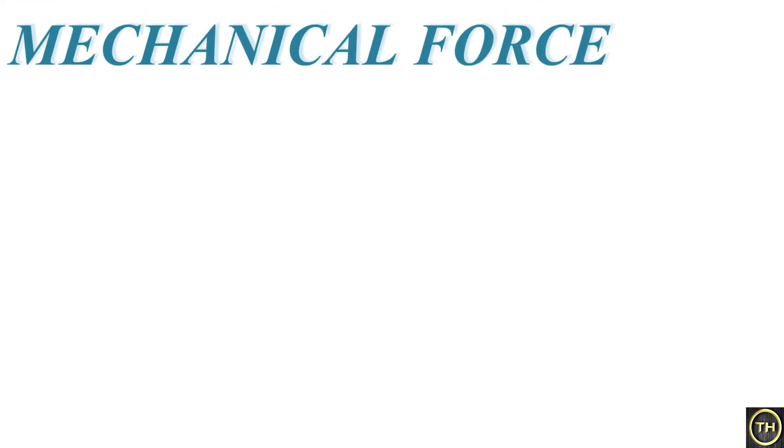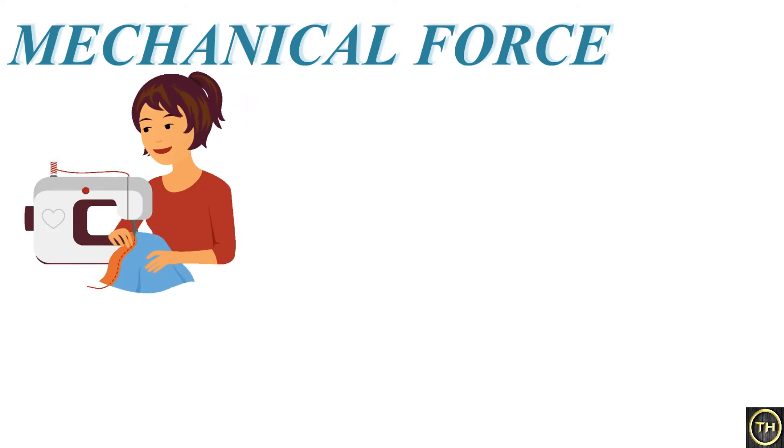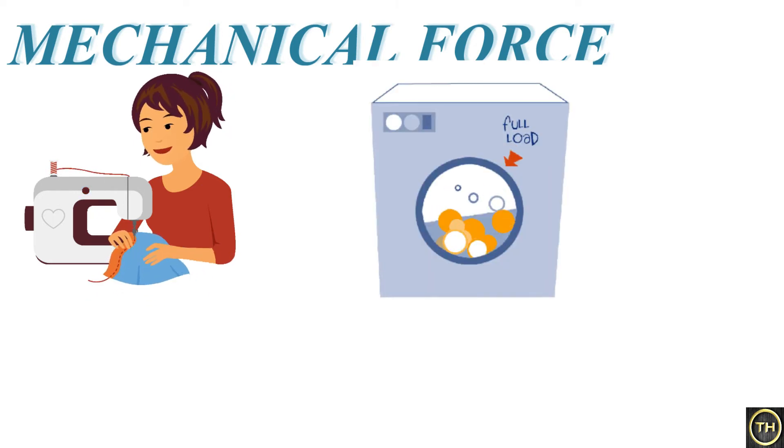The second force is mechanical force. We use different machines for doing many tasks. Like to stitch our clothes, stitching machine is used. To wash our clothes, washing machine is used. There are many types of machines to do particular work. Some machines are run by using electricity or fuel. These are called automatic machines because mechanical force is used here.